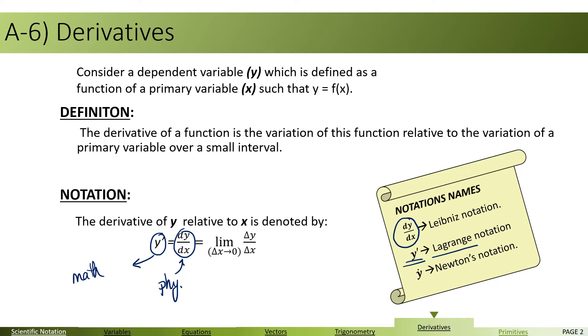There is another notation we use a lot in physics, which is the dot, y dot, being dy by dt. This is the Newtonian notation, which is used mainly when the main variable, or the primary variable, is time t.